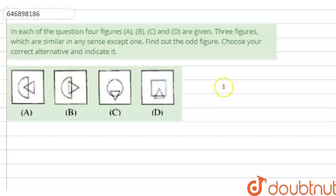Hello friends, the question you have been given is: in each of the questions, 4 figures A, B, C and D are given. 3 figures which are similar in any sense except one. Find out the odd figure, choose your correct alternative and indicate it.